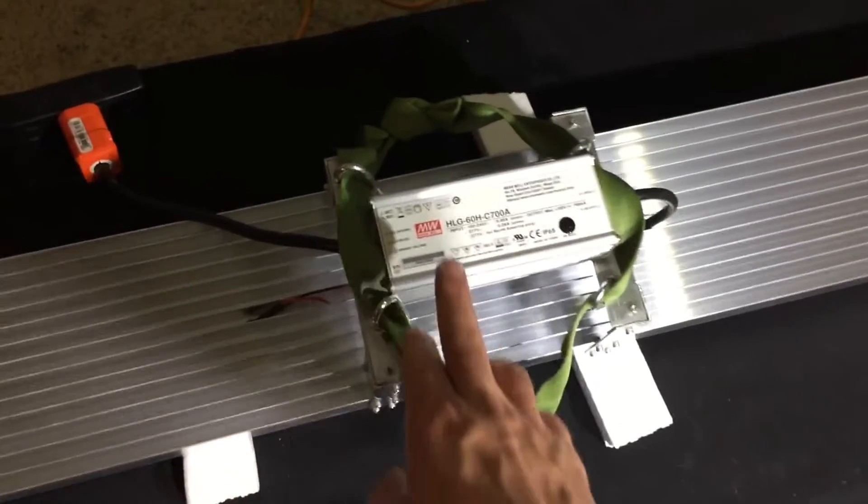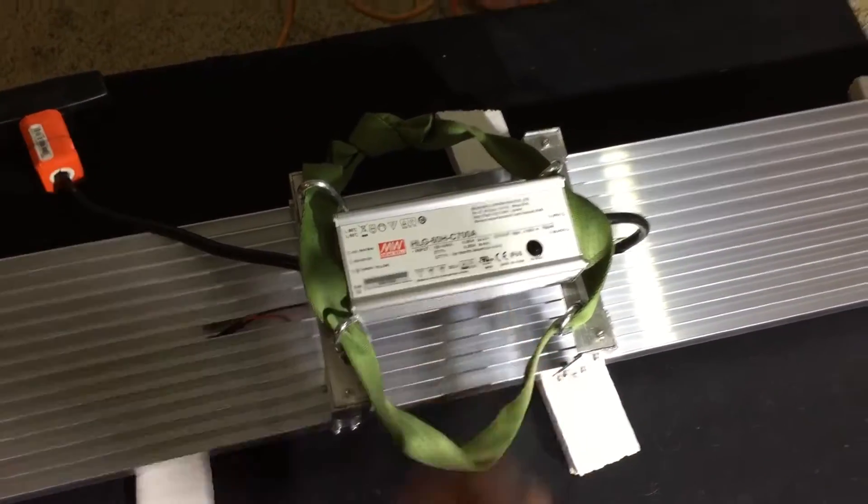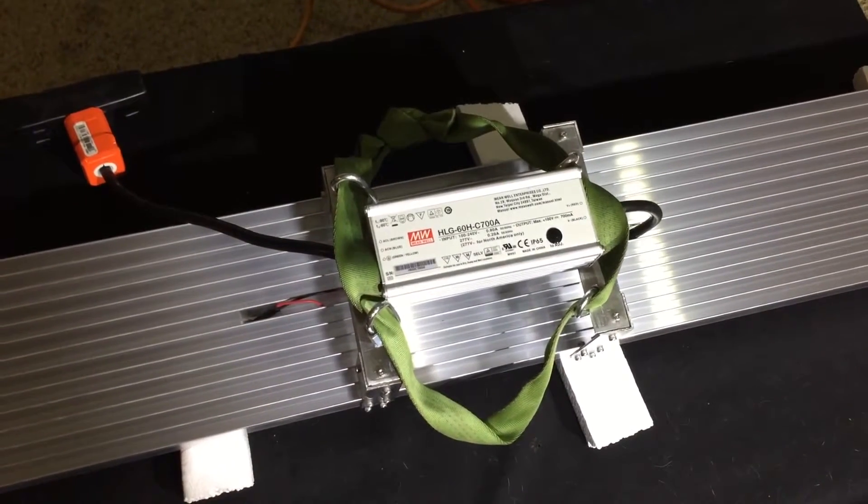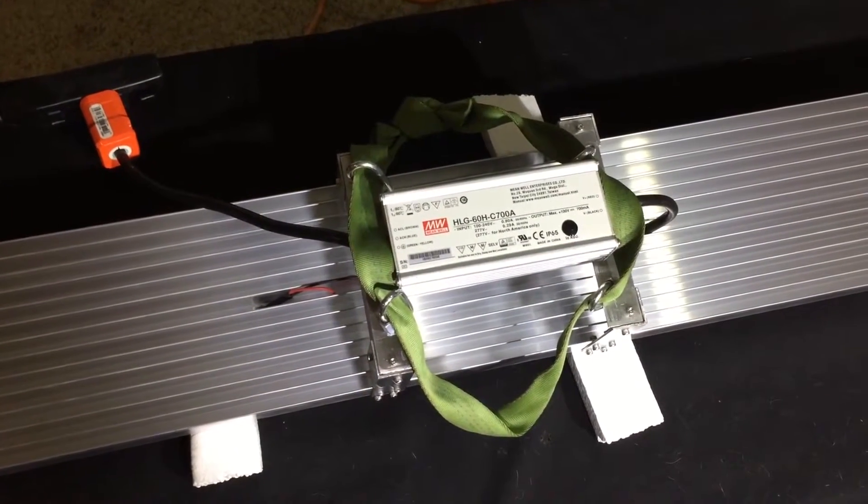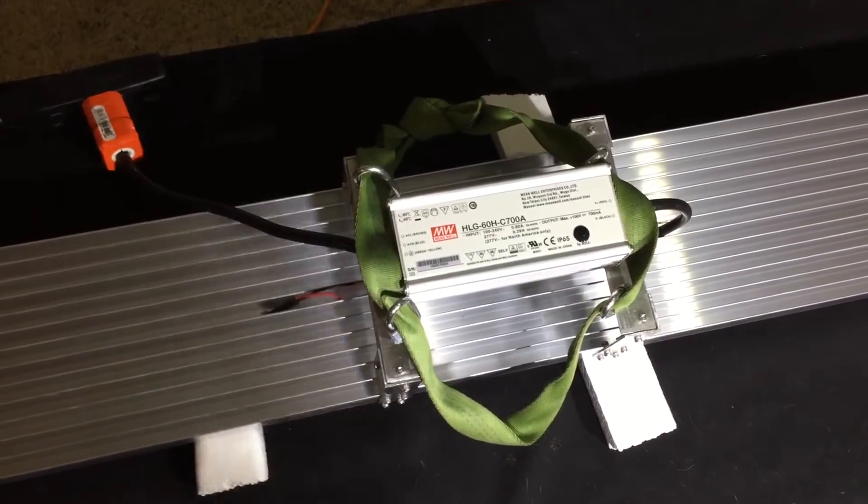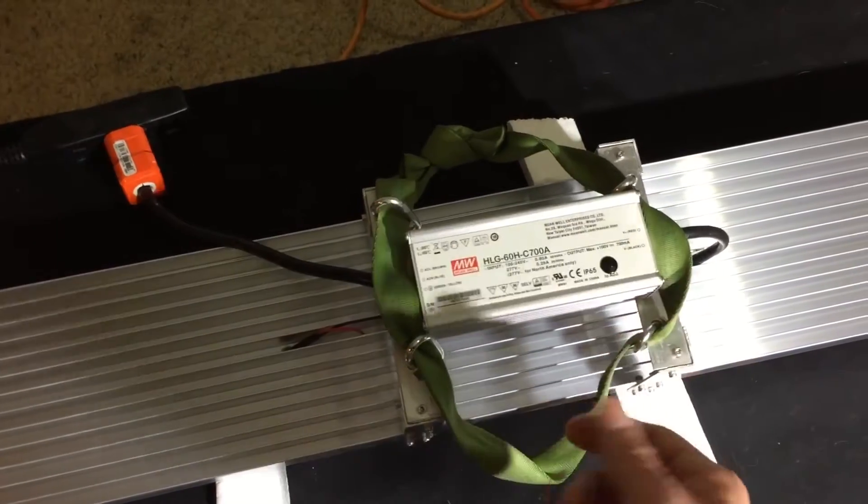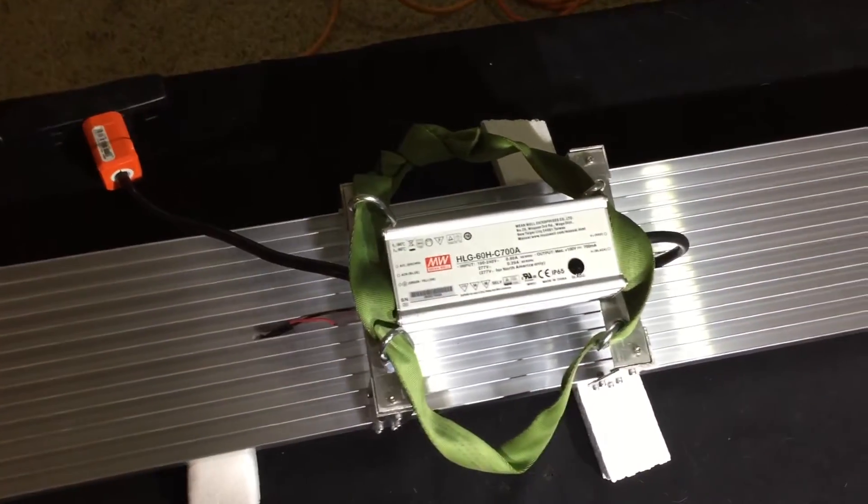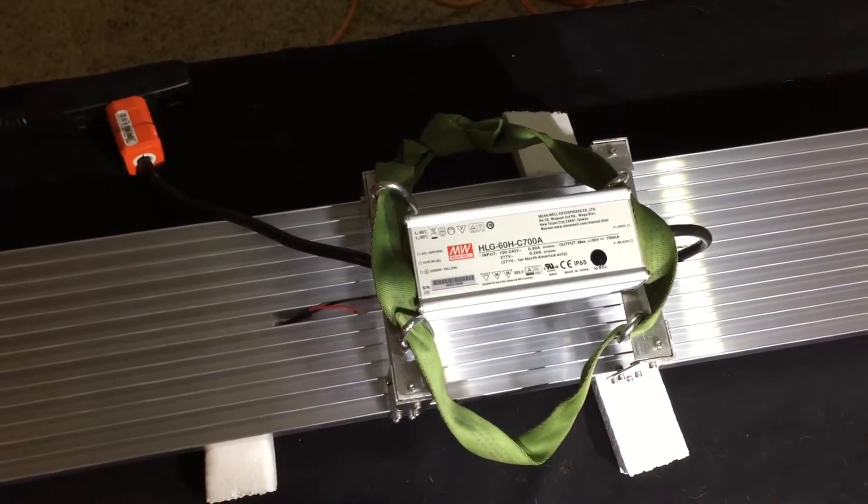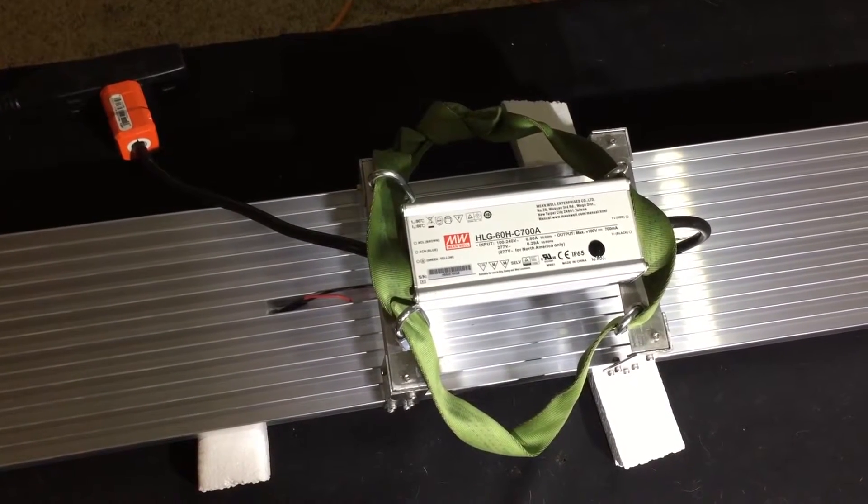Starting off is the Mean Well HLG 60H C700A driver. So 70 watt, 700 milliamp. I think it runs like 400. It's adjustable here with this pot. You pull the little plug off and then you can adjust the potentiometer in there. It'll do 400 to 700 milliamps or so.